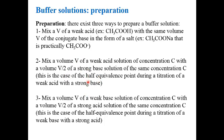The third method is similar but reversed: the weak base is in the beaker and the acid is added from the buret. Again, these are not to be memorized — just understand them based on the study of the titration curve from the previous chapter.